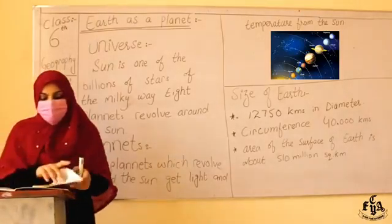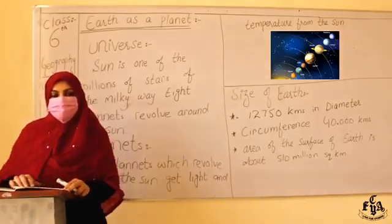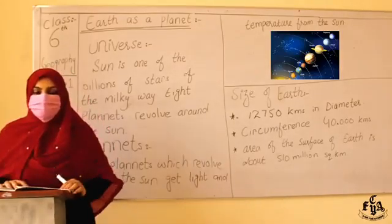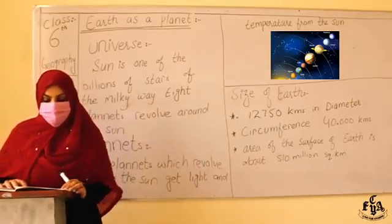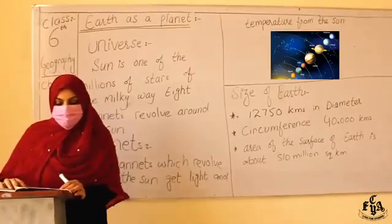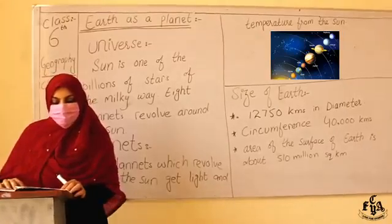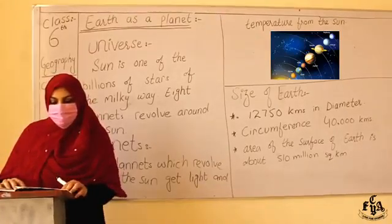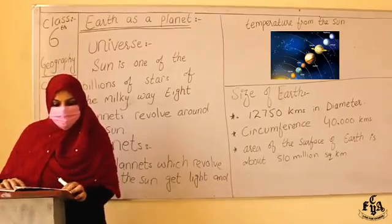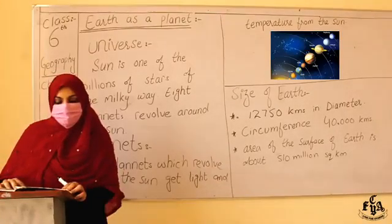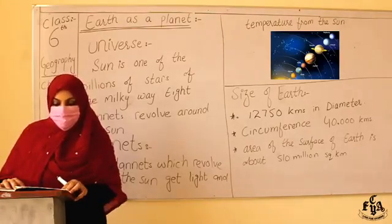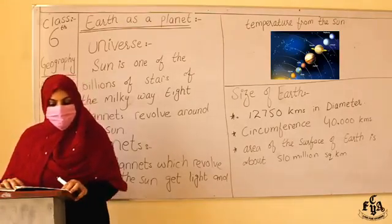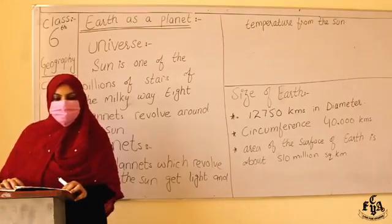Seasons are formed because of the revolution and the tilt of the Earth's axis. In summer, the days are longer and the nights are shorter. In winter, the days are shorter and the nights are longer.